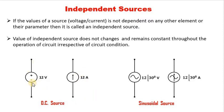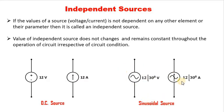Here four types of sources are shown — these are the DC sources and this is how we represent them. This is the representation of a DC voltage source, and this is how we represent a DC current source. On the right-hand side we have a sinusoidal voltage source and a sinusoidal current source. This is the representation of any independent source.